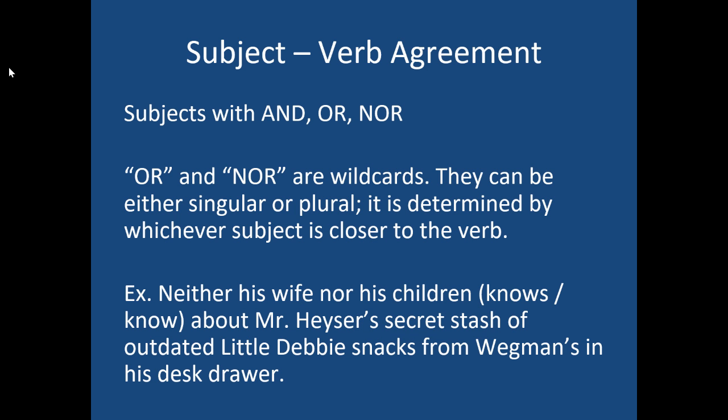Now 'or' and 'nor' are a bit of a wild card because they can be either singular or plural. It's determined by whichever subject is closer to the verb, and that's different from the word 'and'. So even though visually, if we diagrammed it, it would look like there are two subjects, 'or' and 'nor' are basically disjunctive — meaning they're not really joining something together, but saying it's either one or the other.